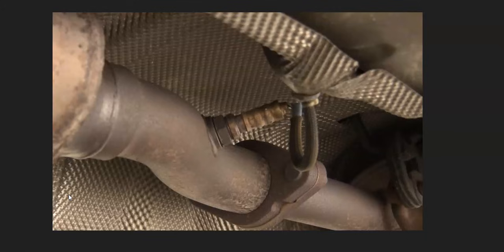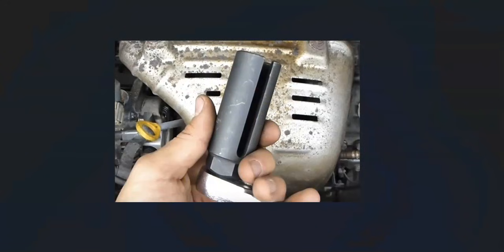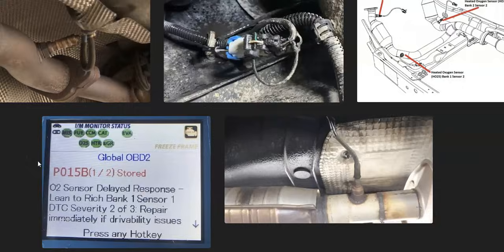I'll put a link below to the special tool if you need it. That's basically it — just a basic overview of how you fix a Chevy or GM vehicle with the P015B code. If you have anything to add, please comment below. If you have questions, ask and I'll try to answer them. If this video helps you, please click like, subscribe, and have a good day.